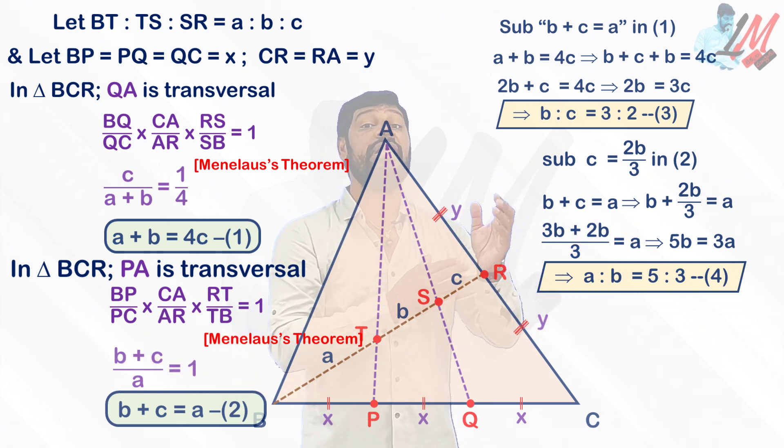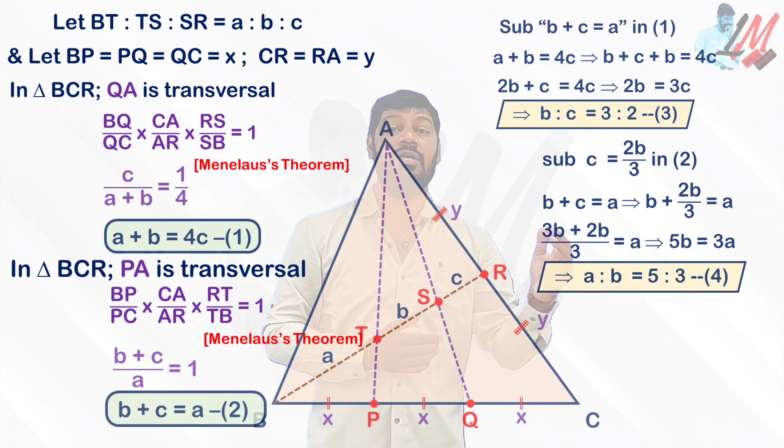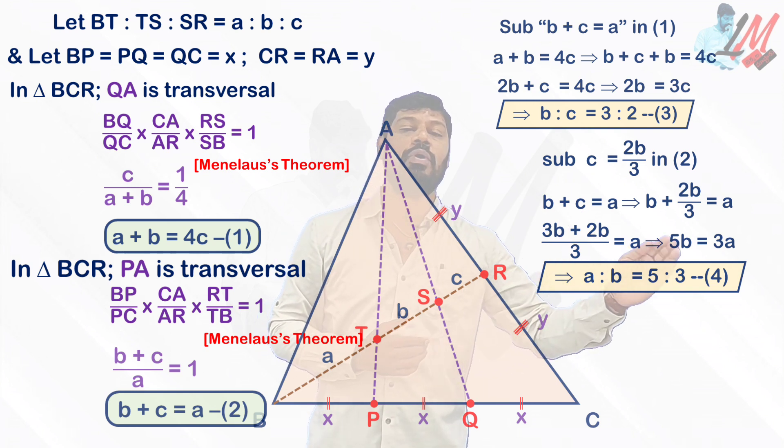If you do substitute, then you are going to get the ratio between A and B. So you are going to get A is to B equal to 5 is to 3.